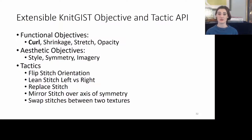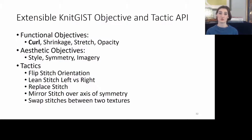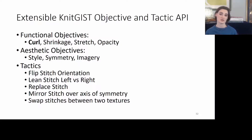We provide an extensible KnitGist objective and tactic library, made up of functional objectives of curl, shrinkage, stretch, and opacity, and aesthetic objectives of style, symmetry, and imagery. We provide tactics which modify textures by either flipping stitch orientations, leaning stitches left to right, replacing stitches, mirroring stitches across an axis of symmetry, or swapping stitches between two structures.